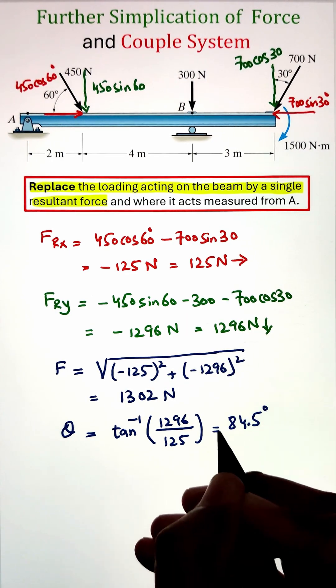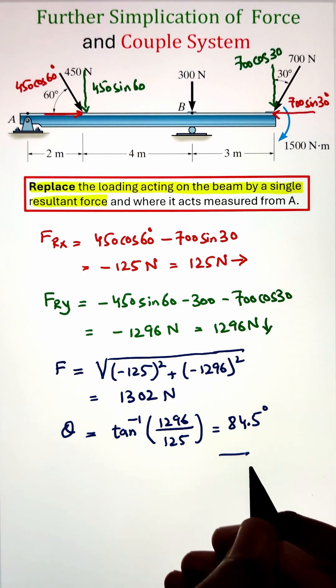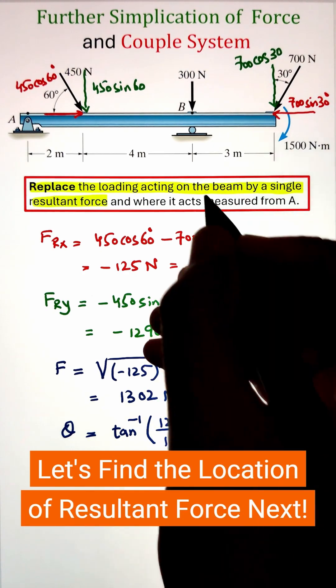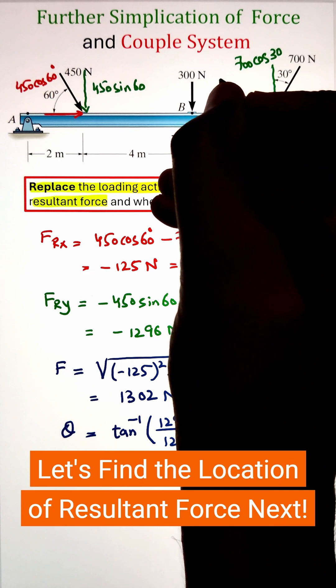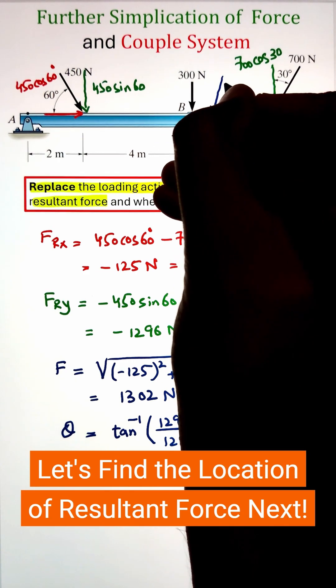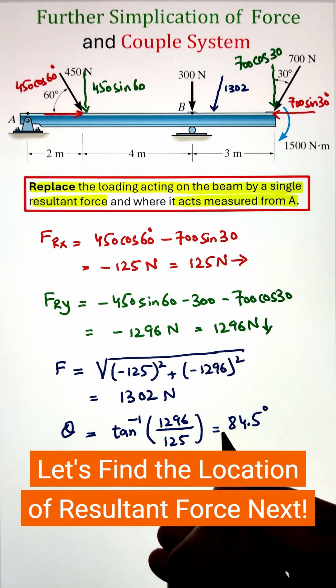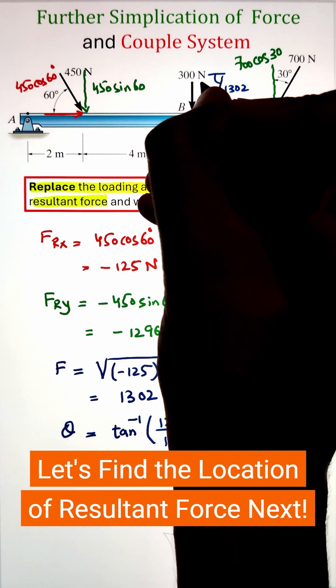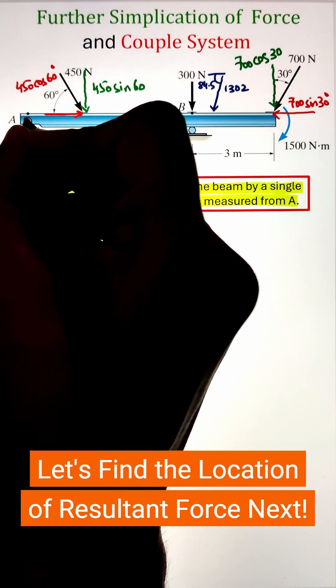Next we can go ahead and figure out the location of this resultant force with respect to point A by drawing the force on the beam itself. Since the force magnitude is 1302 and making an angle of 84.5, this can be drawn on the beam. Next this position, let's call it an unknown value of x that we are going to solve for.